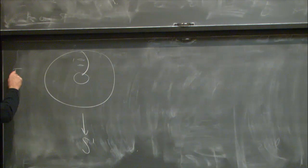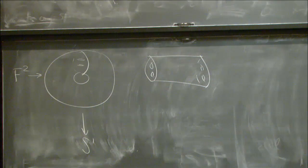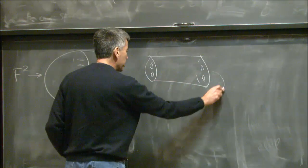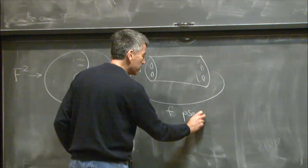These are three-dimensional objects made by taking a surface cross I and gluing together the two boundary surfaces. This is one of the classes that Thurston studied, and he showed that when this gluing map is pseudo-Anosov, then this three-manifold admits a hyperbolic structure.